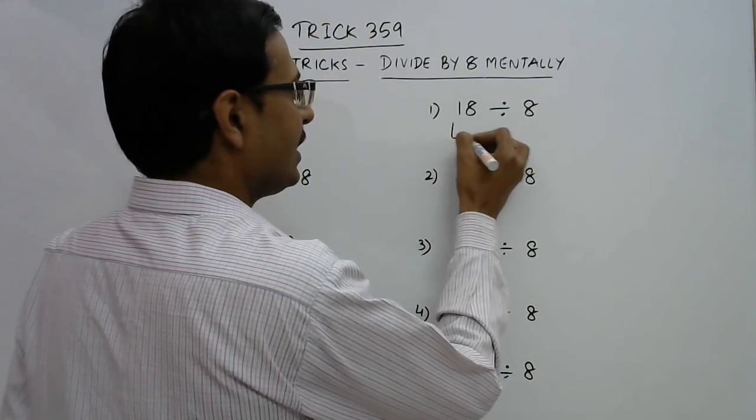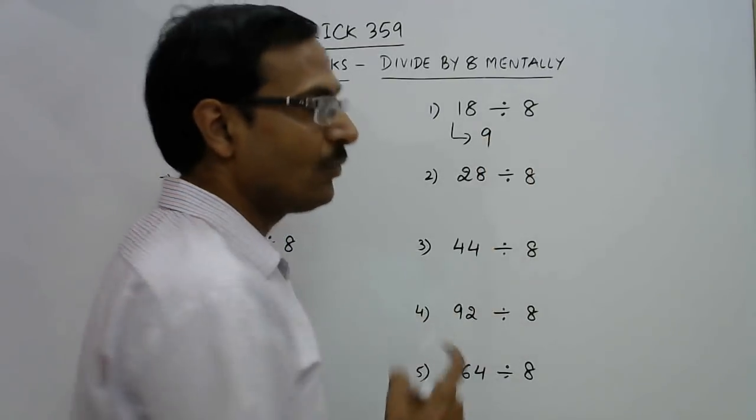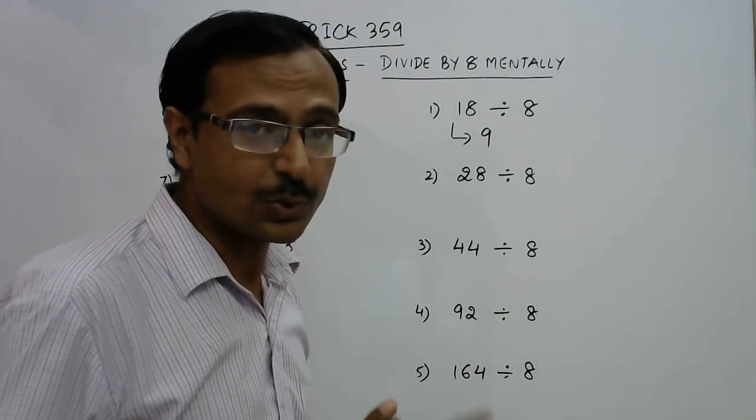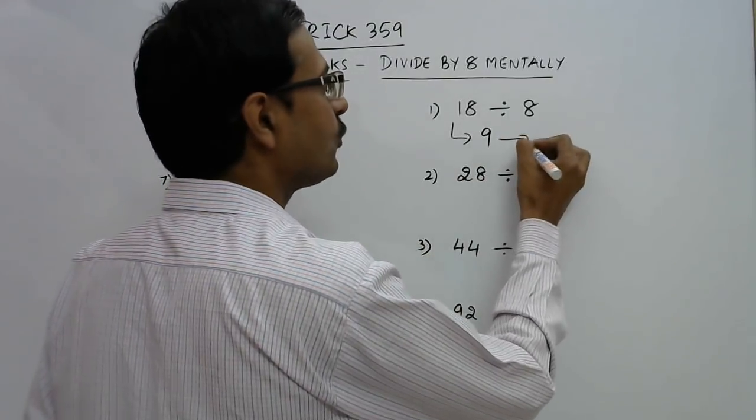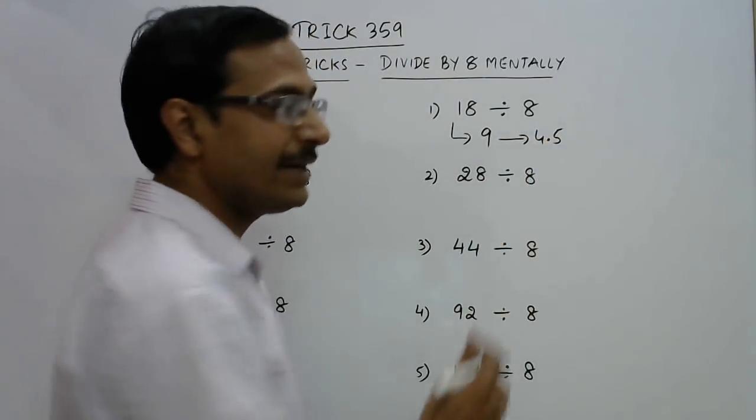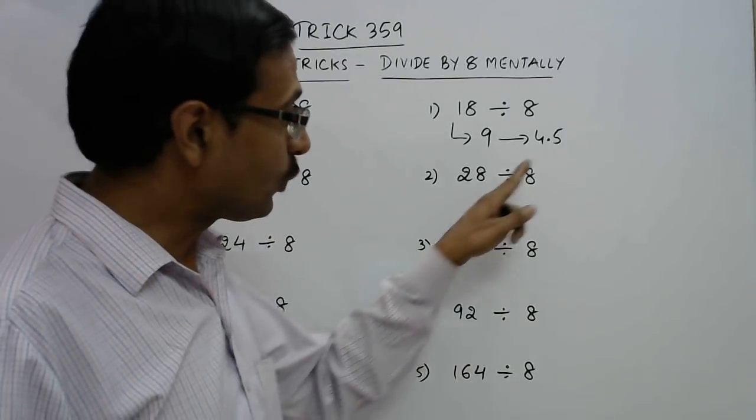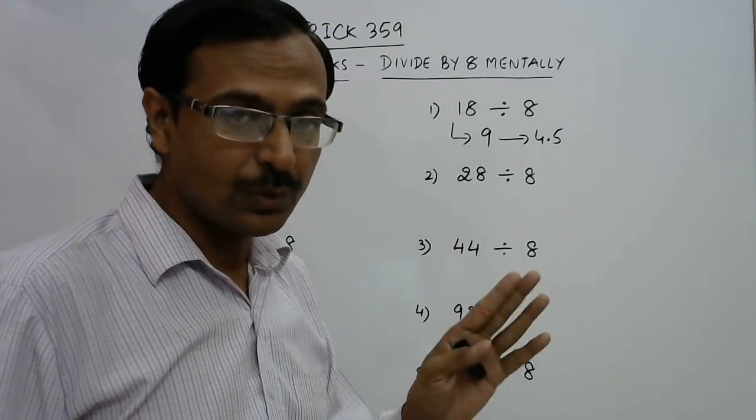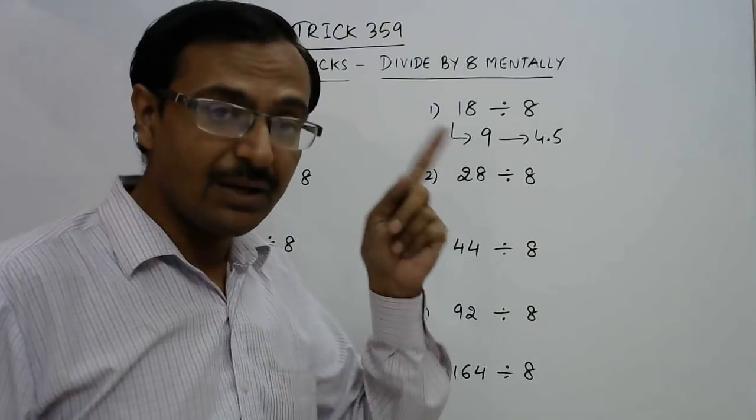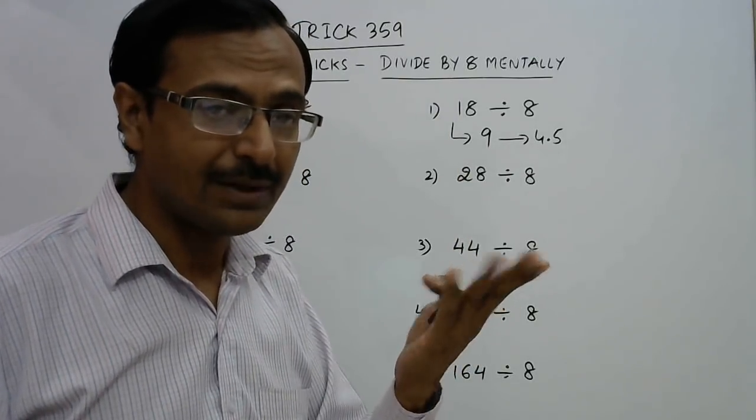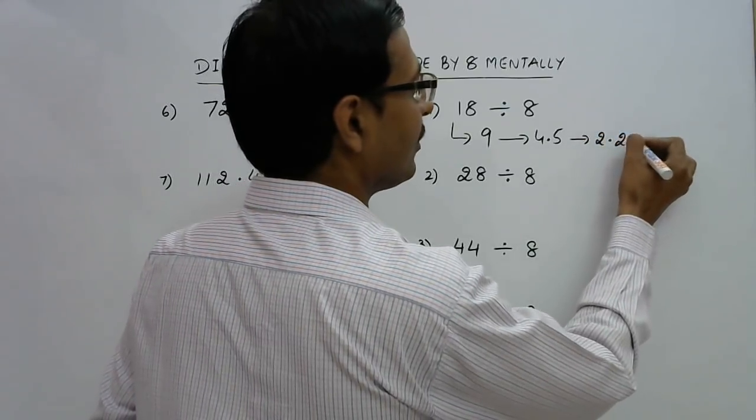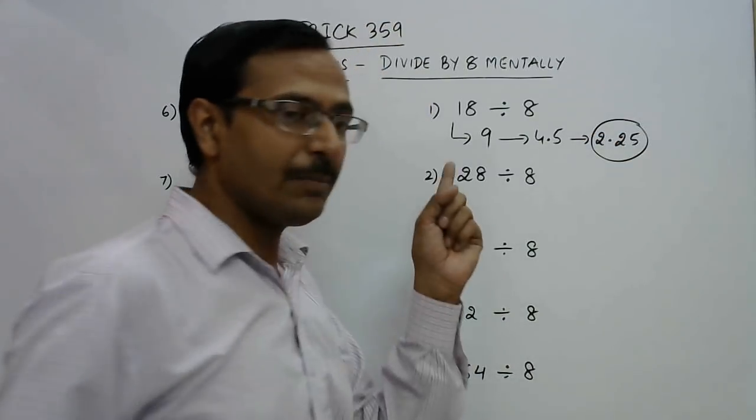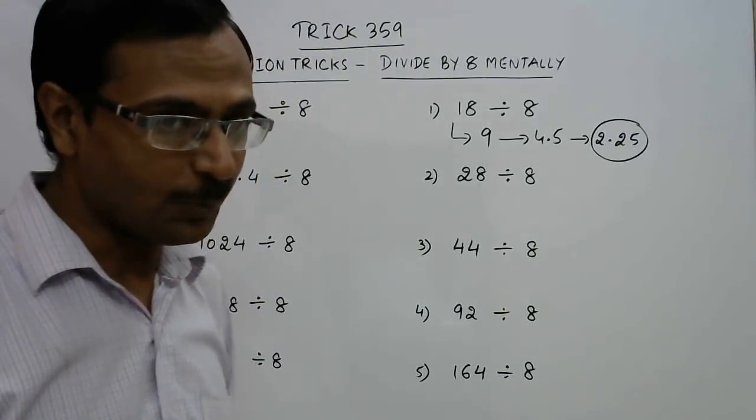See, 18 becomes 9 when you take the half, so we have divided 18 by 2. 9 becomes 4.5 when you divide it again by 2, so 4.5 is the result when you divide this 18 by 4. And now one more time take the half, 2.25 is the result when you divide 18 by 8. Hope you have understood that.